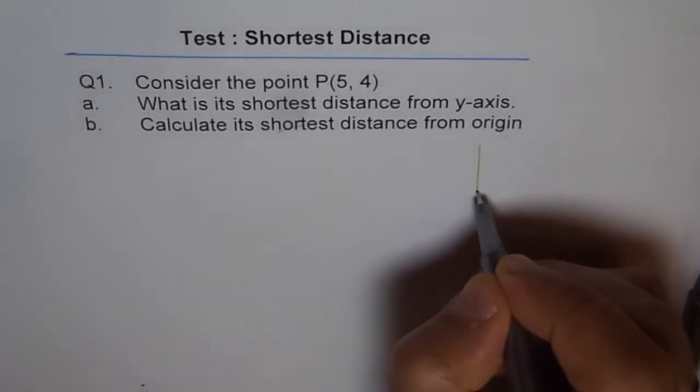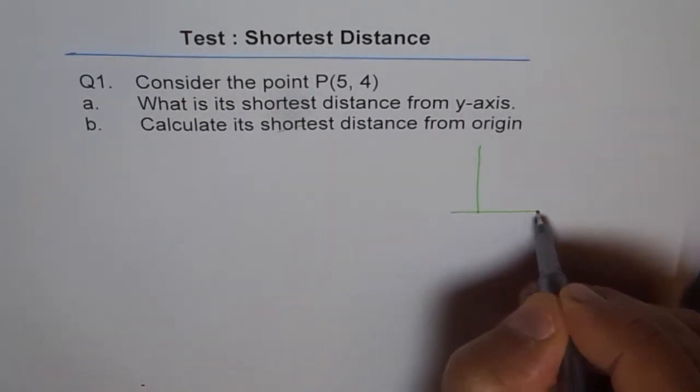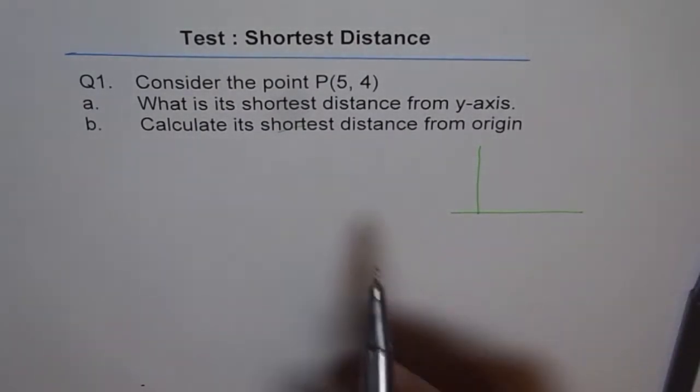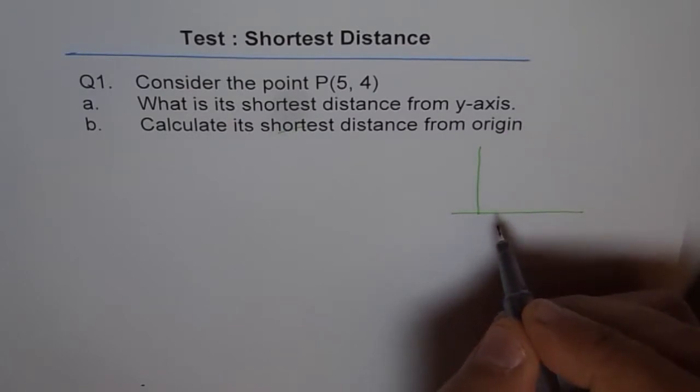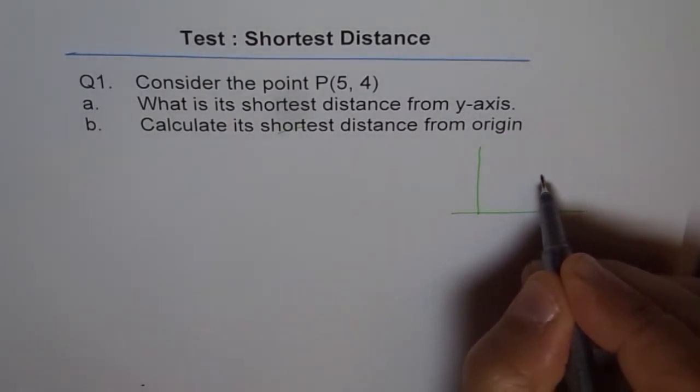Let's try to sketch it. X and y-axis. Since all are positive, I'm just drawing the first quadrant here. The point given to us is 5, 4, so let's say we have a point here which is...